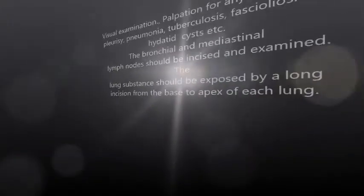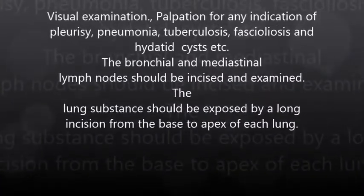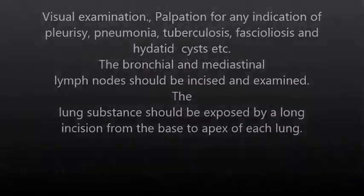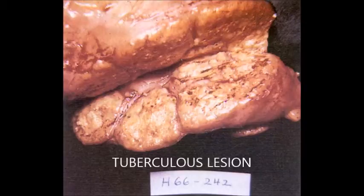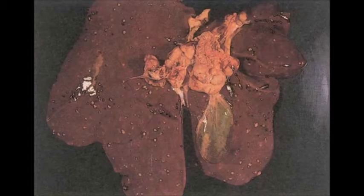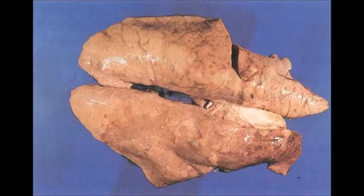Examination of lungs: Lungs are examined followed by palpation for any indication of pleurisy, pneumonia, tuberculosis, fasciolosis, and hydatid cysts. The bronchial and mediastinal lymph nodes should be incised and examined. The lung substance should be exposed by a long incision from the base to the apex of each lung.